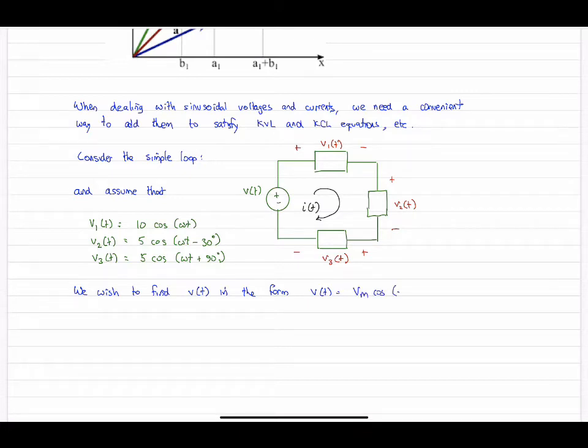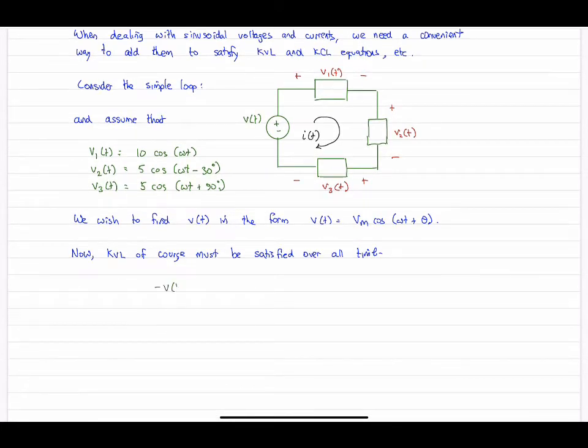And so what we want to do is use KVL here to determine the overall voltage, the applied voltage V(t). And we want to express it in a useful form. In other words, a single cosine with a single magnitude and a single phase angle. So KVL is our starting point, which of course must be satisfied for any type of signals, DC, AC, everything.